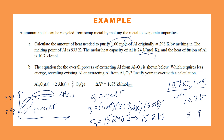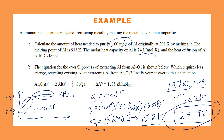Adding both together gives 25.9 kJ total to raise the temperature and completely melt one mole of aluminum. Part A is worth two points: one for the correct q from temperature change, and one for the correct overall total.